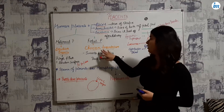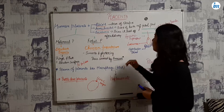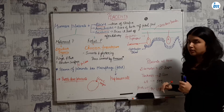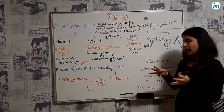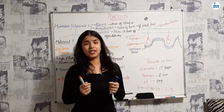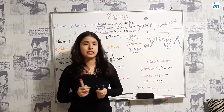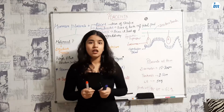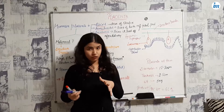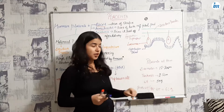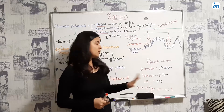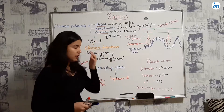Now about placenta at term: the diameter of the placenta is generally 15 to 20 centimeters, the thickness is 2.5 centimeters, and the weight is 500 grams.